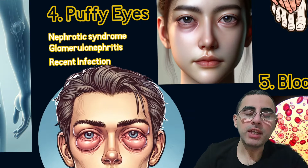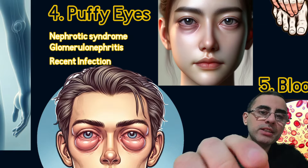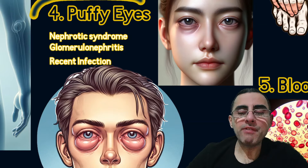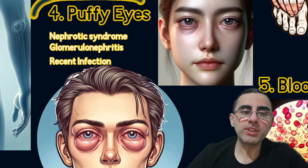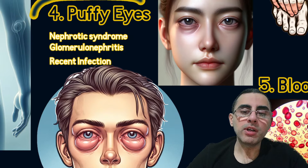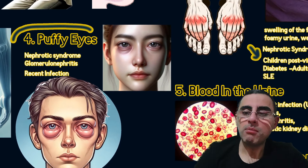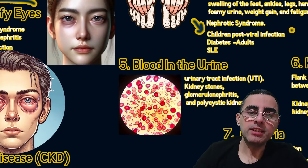The fourth important symptom of kidney disease is puffy eyes. Puffy eyes happen because of protein loss, and are usually caused by nephrotic syndrome, glomerulonephritis, or recent infection. Puffy eyes are more common among older adults when the skin also loses elasticity and the kidneys are damaged over time.